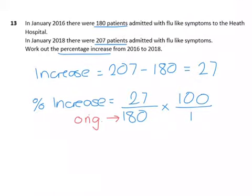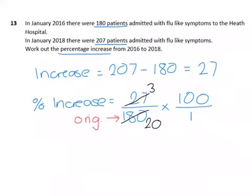Now to begin with, this looks tough for a non-calculator, but if we look at this fraction here, we might notice that both of those numbers are in the 9 times table. So dividing the numerator by 9 gives me 3, and the denominator by 9 gives me 20 — so already it's starting to look much nicer. I'm now going to look at this 100 and this 20, and I know they're both divisible by 20. So dividing by 20 gives me 1 on top and 5 on the bottom.